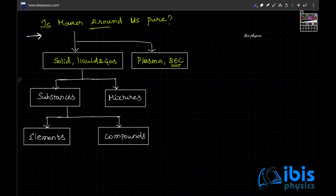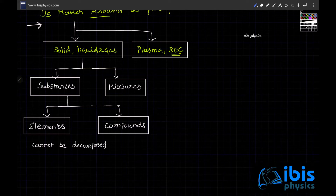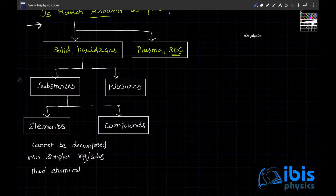Robert Boyle was the person who gave a workable definition of an element. An element is something that cannot be decomposed into simpler substances or ingredients through chemical means. Chemical means refers to through chemical reactions — an element cannot be further divided or decomposed into simpler substances through chemical reactions.